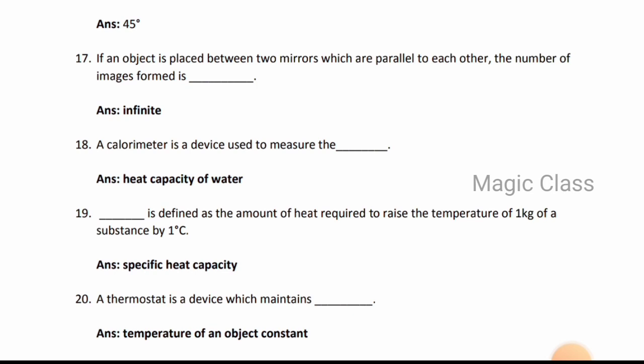Question 19: Specific heat capacity is defined as the amount of heat required to raise the temperature of one kg of substance by one degree Celsius. Question 20: A thermostat is a device which maintains temperature of an object constant.